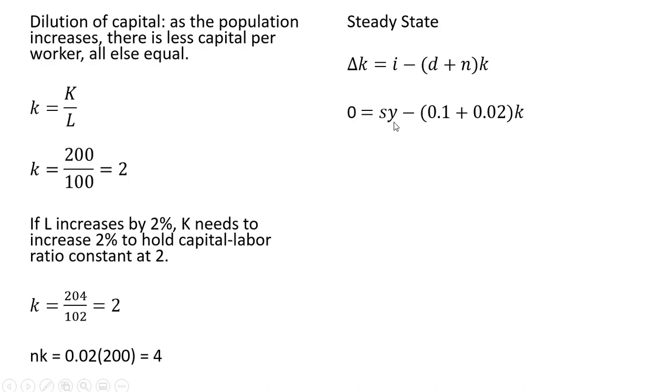I is just s times y, the saving rate times income or output, and we can replace y with the per worker production function. d is 0.1, and population growth or labor force growth in this model is 0.02.